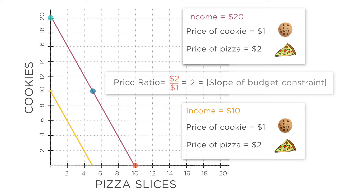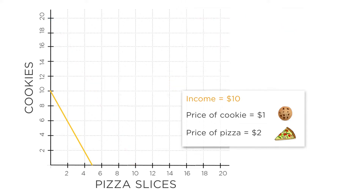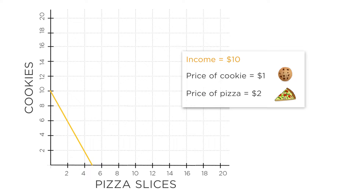Now look at what happens if instead of your income doubling, the price of a slice of pizza drops from $2 to $1. Now if you spend all $10 of your income on pizza, you can get 10 slices, not 5. If you spend all your income on cookies, you can still afford 10 cookies — that hasn't changed. You can go somewhere in the middle too. You can spend $5 on 5 cookies and $5 on 5 slices of pizza, or $2 on 2 cookies and $8 on 8 slices of pizza.